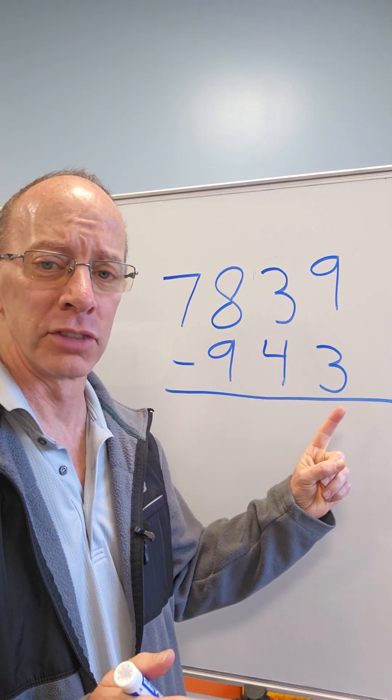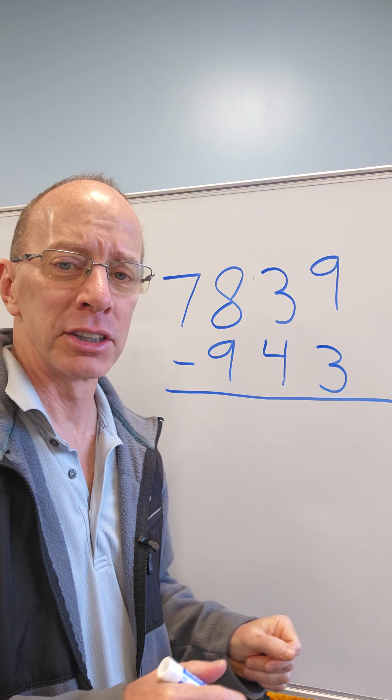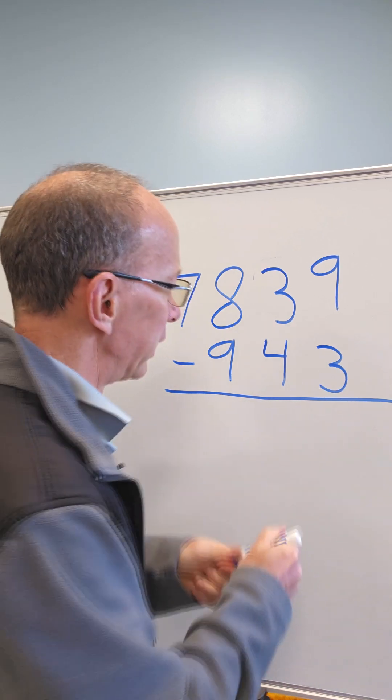First of all, we always subtract the ones first. These are the ones right here. So 9 minus 3, 9 minus 3, 6. All right, so put the 6 right here.